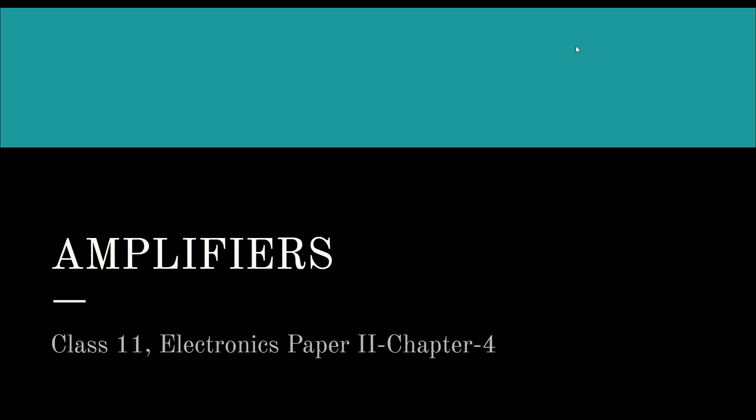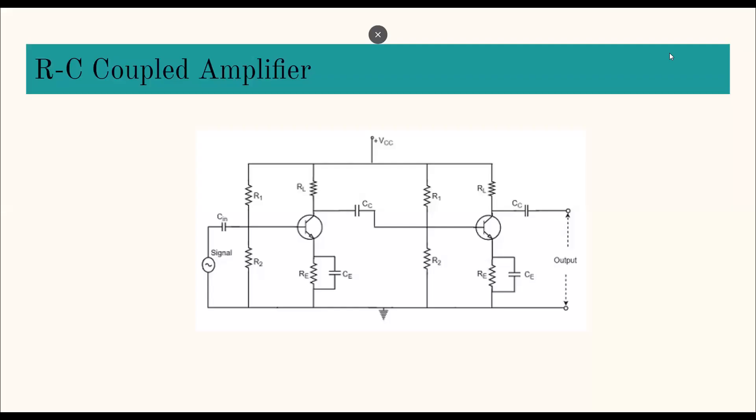We had seen what is coupling and cascading. Today we are going to see the first type which is known as RC coupling. Here we are, this is the circuit diagram for RC coupled amplifier. Let us see the meaning of each word: R means resistance, C means capacitor. So there is a capacitor and resistance combination joining the two stages.